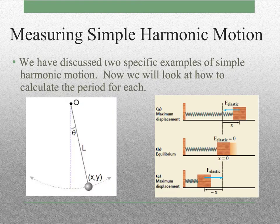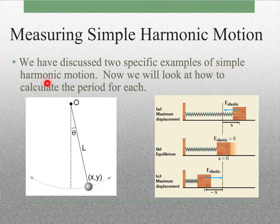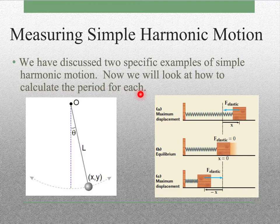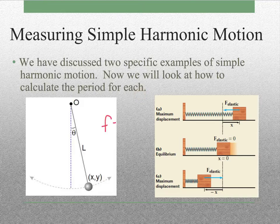We've discussed two specific examples of simple harmonic motion, and now we're going to look at how to calculate the period for each. If you remember, the frequency is just 1 over the period. So once we know how to calculate the period, it's easy to find the frequency.